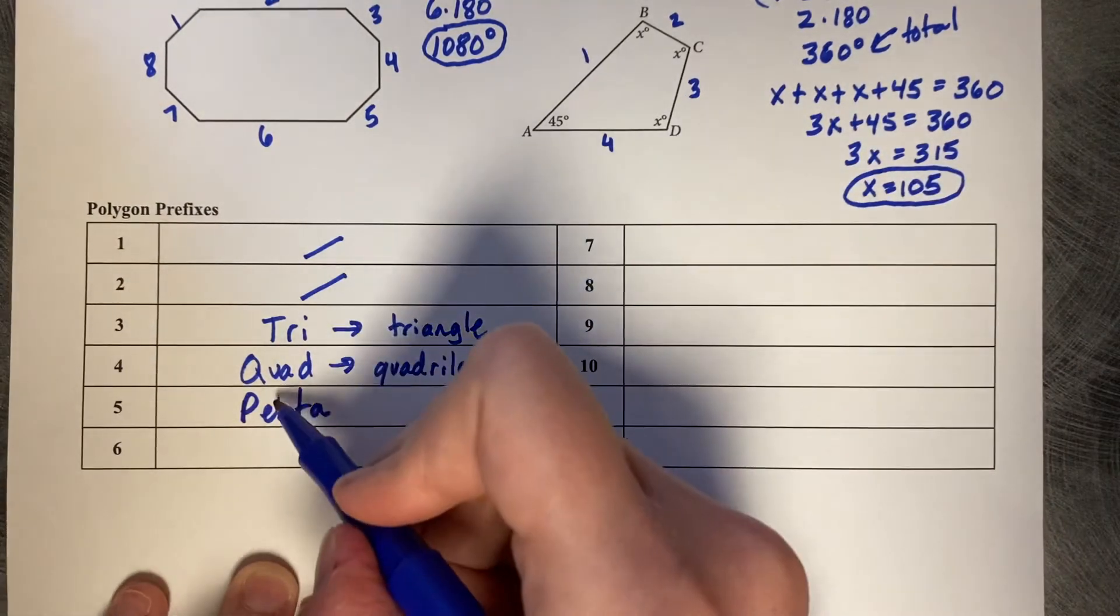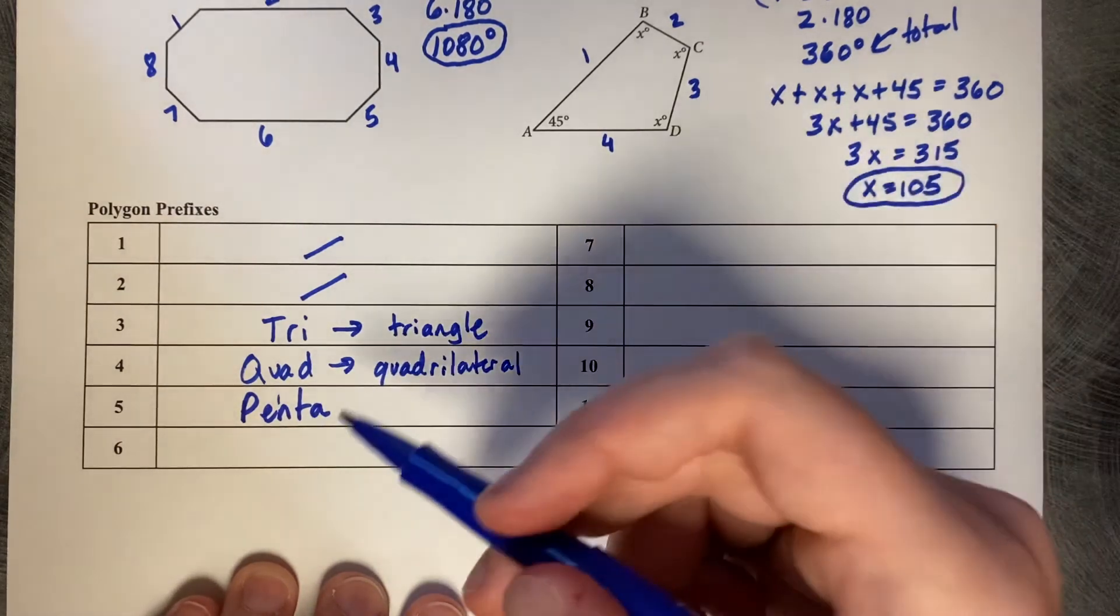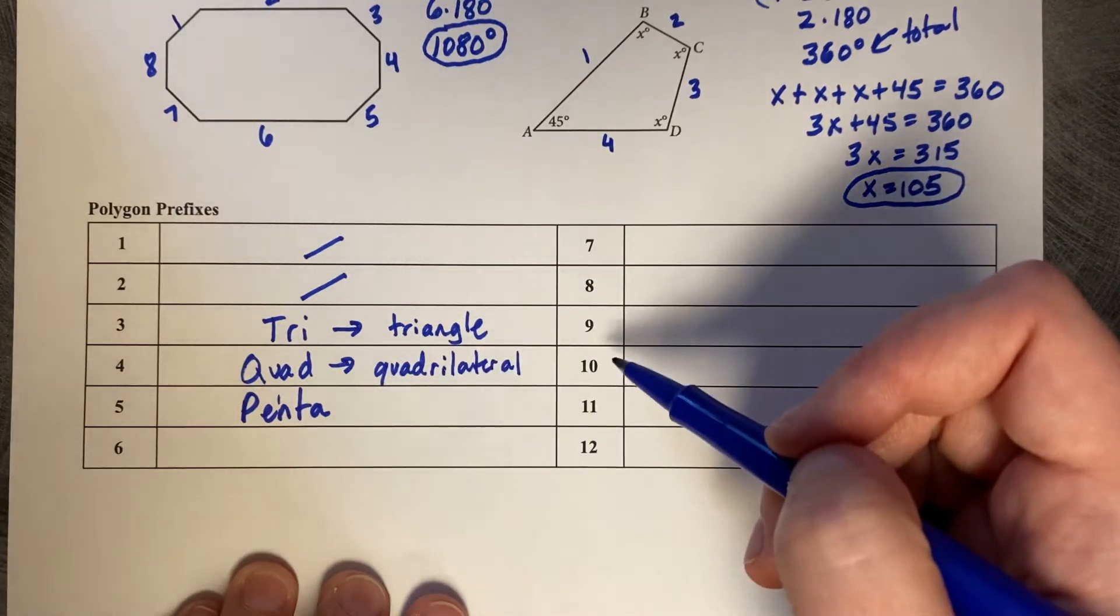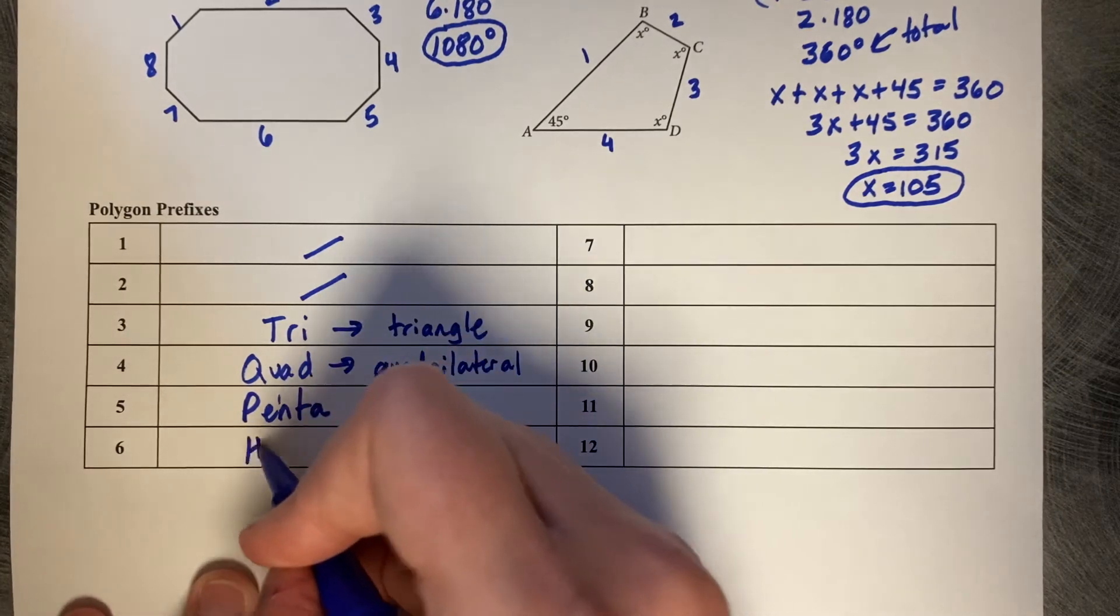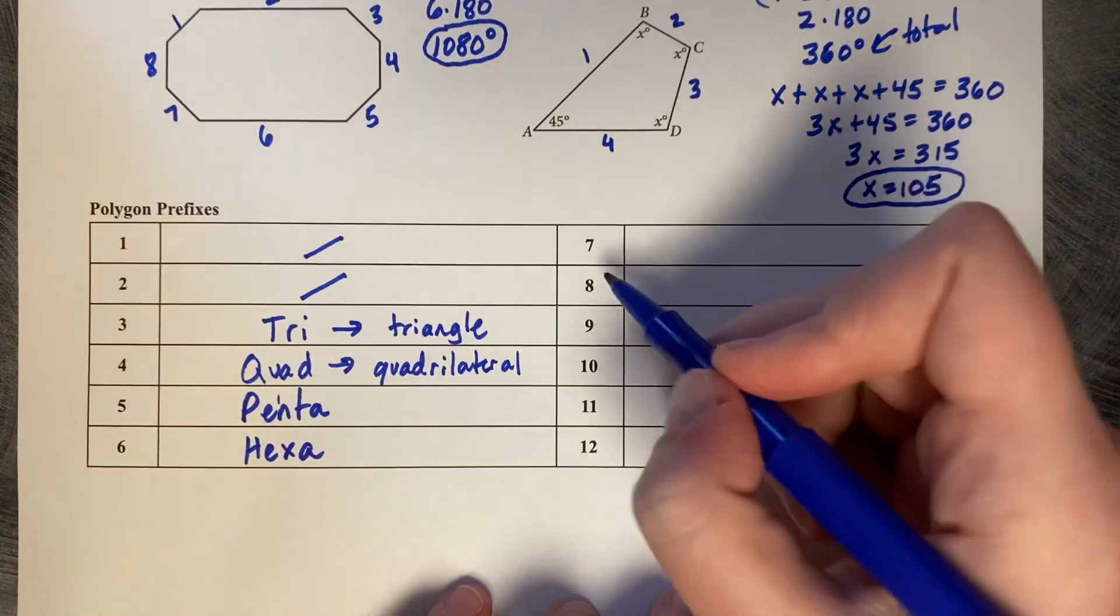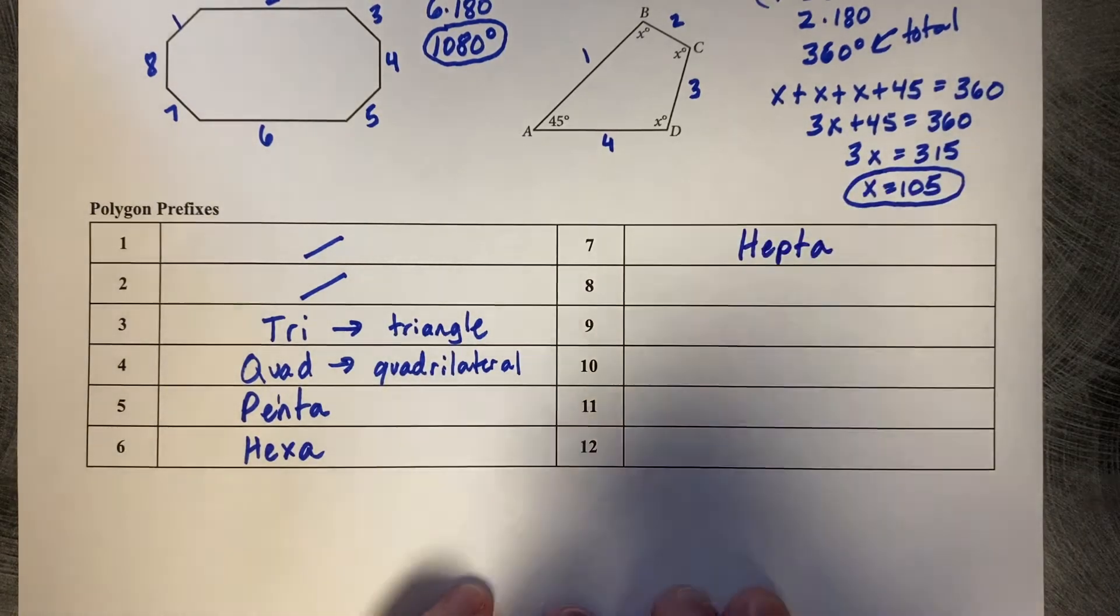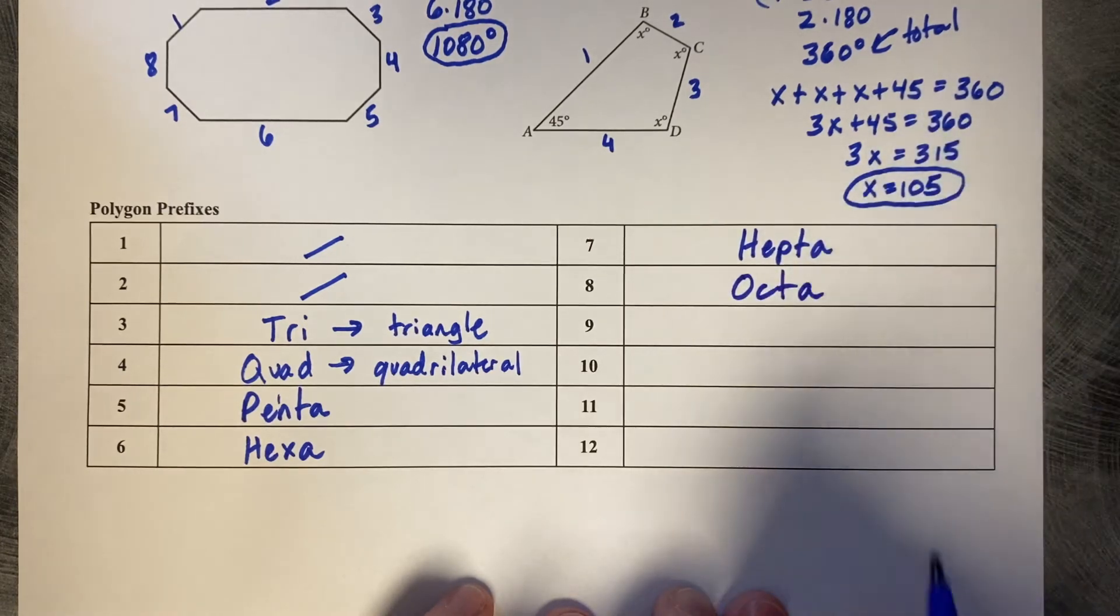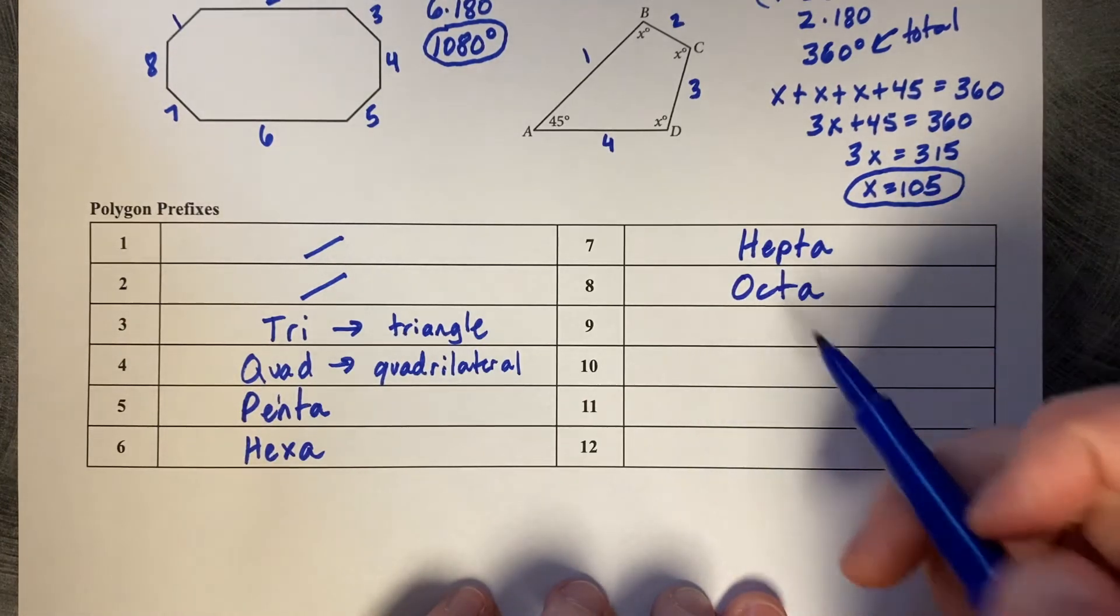And we do call it a pentagon. So at five sides, you do start calling it whatever it is with gon attached to it, so pentagon. Six is called a hexa, hexagon is a six-sided figure. Seven is a hepta, heptagon. Eight-sided figure is octa, or an octagon, or an octopus. Octopus, not a polygon, but octa meaning eight.